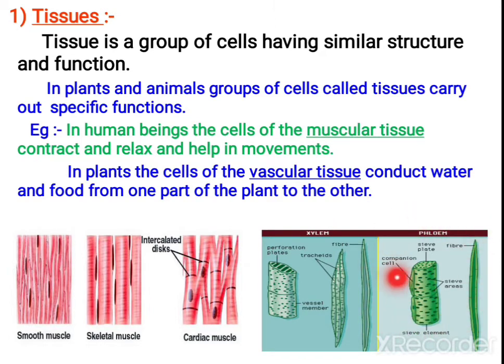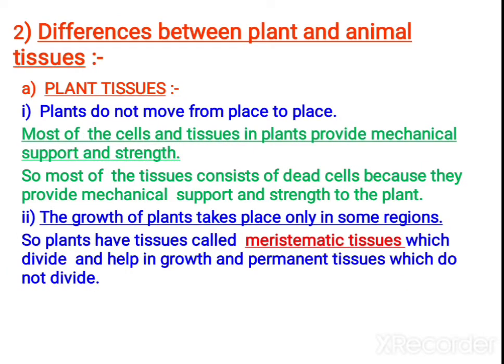This is phloem. These cells are helpful in the conduction of food. That is why you call them as phloem, which comes under the heading vascular tissue. Now let us study the differences between plant tissue and animal tissue.